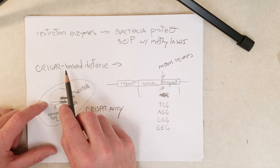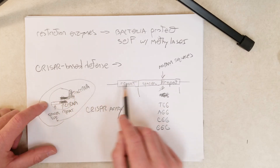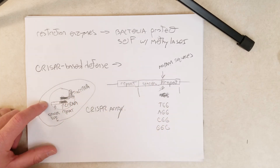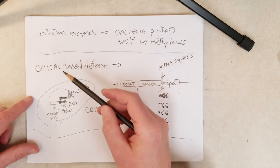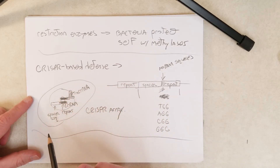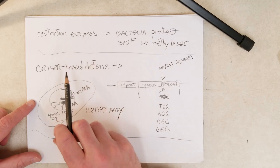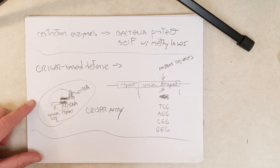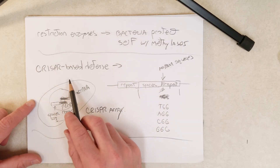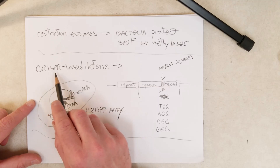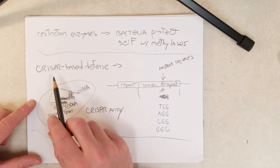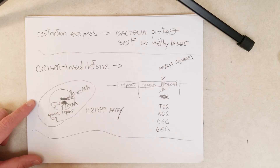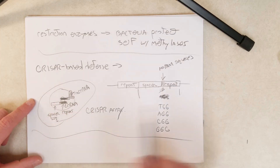So that is how the bacterium keeps Cas9 from cleaving its chromosome. So far in these videos we have covered two ways bacteria defend themselves from viruses: restriction enzymes and CRISPR-based defense. In the next video we are going to look at how biotechnologists and molecular geneticists can use CRISPR to knock out genes in different organisms.